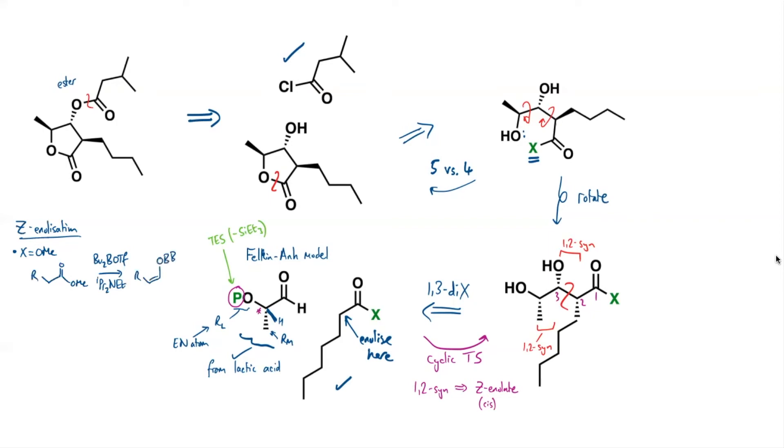We could use so-called soft enolization techniques using boron. So a standard way of doing this would be to use dibutyl boron triflate in the presence of a bulky amine base, like this diisopropyl ethyl amine. That should form the Z enolate for us, so dibutyl boron enolate with an O-methyl group there. And this boron is Lewis acidic, it's got a 3p orbital left, so we can use that to set up a cyclic transition state. So that's all good.